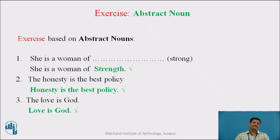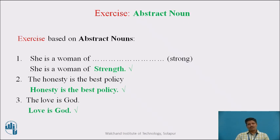Let us do an exercise based on Abstract Nouns. In the first sentence, fill in the blank using the adjective 'Strong.' The answer is 'Strength.' Most Abstract Nouns are formed from adjectives, so the Abstract Noun from 'Strong' is 'Strength.' The answer is: she is a woman of Strength, where Strength works as an Abstract Noun.